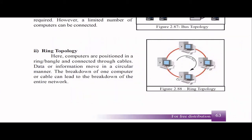Then comes ring topology. Computers are arranged in a ring, connected to each other using cables, and data is transmitted in a circular manner. The main problem is that if one cable or one computer breaks in this topology, the whole network breaks because the circular communication path is interrupted.